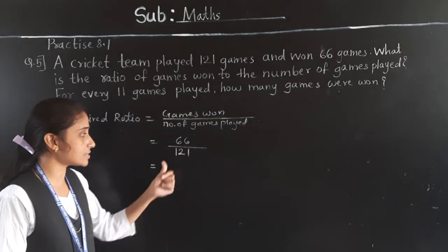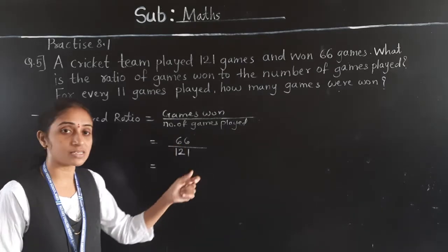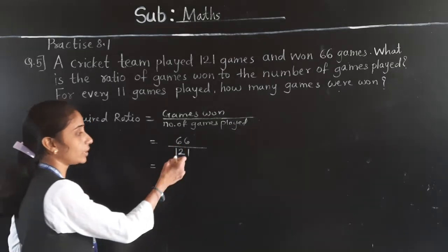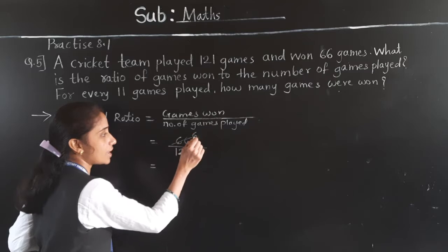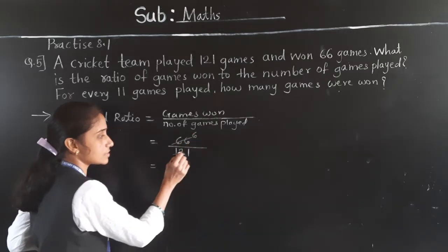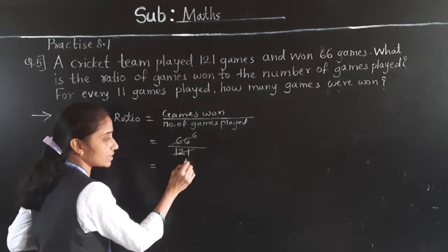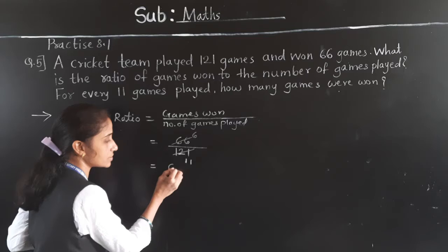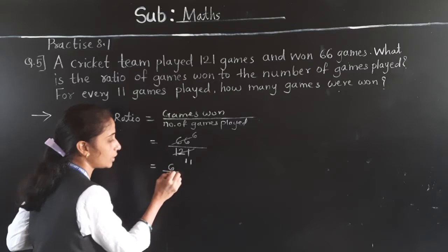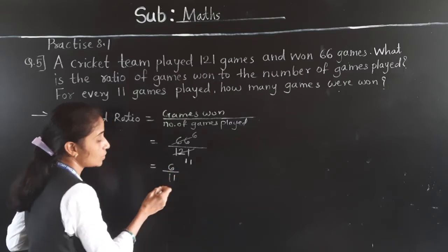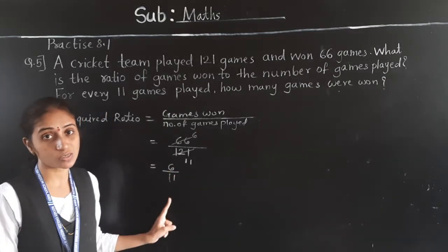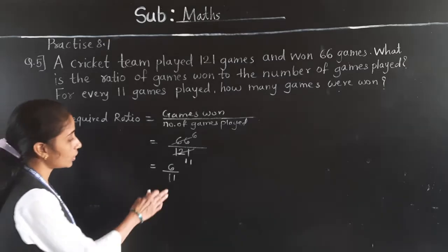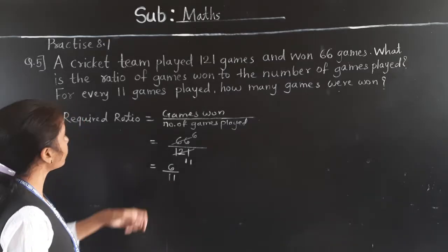11 sixes are 66, and 11 elevens are 121. So what we get is 6 to 11. The required ratio is 6 is to 11.